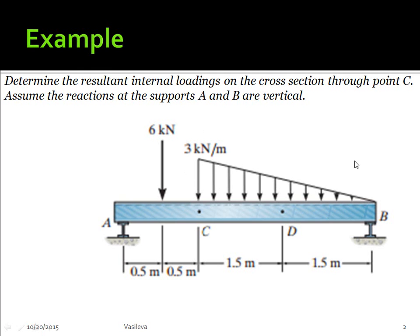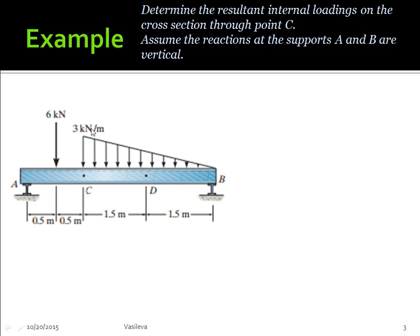We have this distributed load here that we're going to have to simplify. The way we're going to simplify this is we know that the area of a triangle is one-half base times height. So we're just going to do one-half times the base, which is three meters, and times the height, which is three kilonewtons per meter. We end up with 4.5 kilonewtons. That gives us the magnitude of this total distributed load.